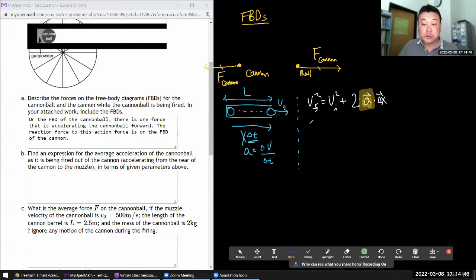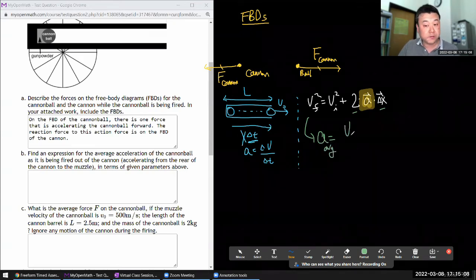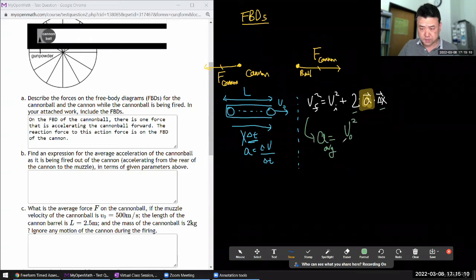Once you remember it then you can solve for the acceleration here. Assuming acceleration is constant, the acceleration would be given by final velocity v_naught, initial velocity zero. Average acceleration would be v_naught squared divided by 2L. That's it.